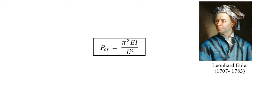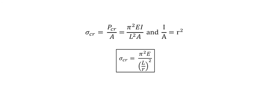Where PCR equals the critical load on the column just before it begins to buckle, E equals modulus of elasticity, I equals the least moment of inertia, and L equals the unsupported length of the column.